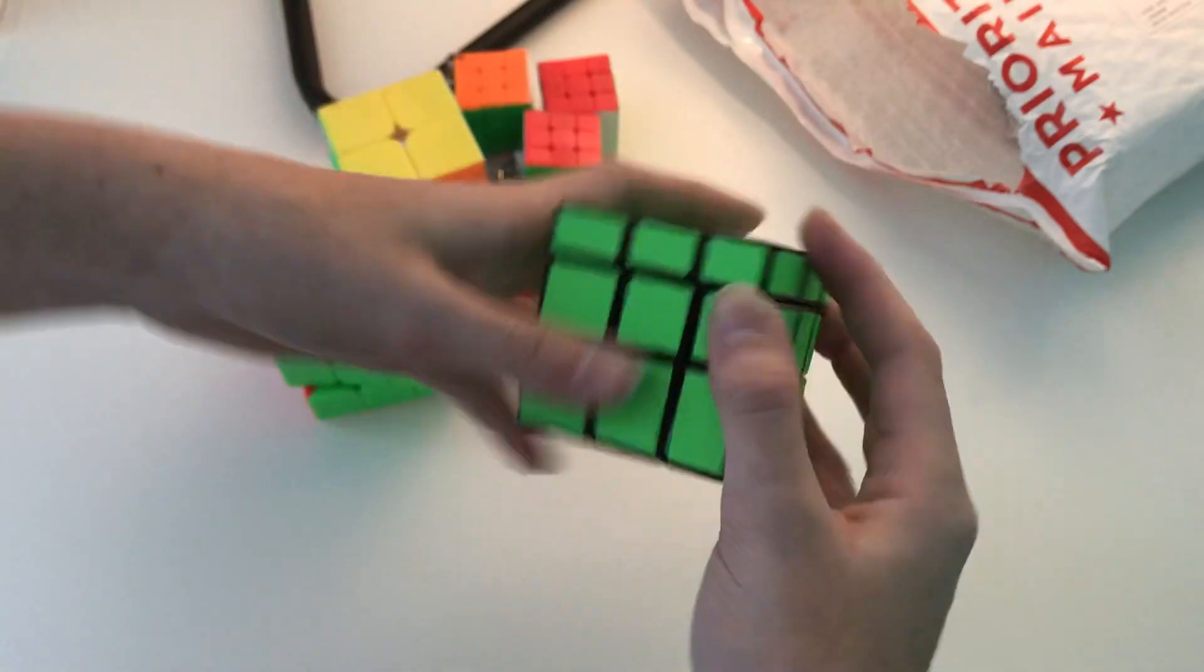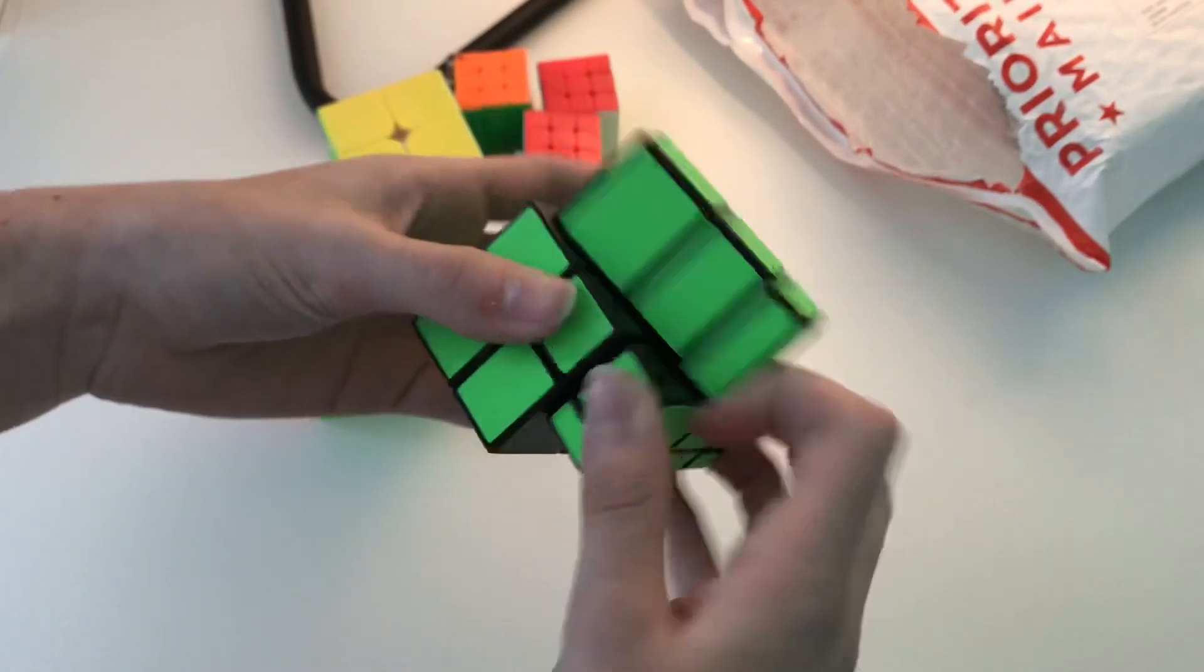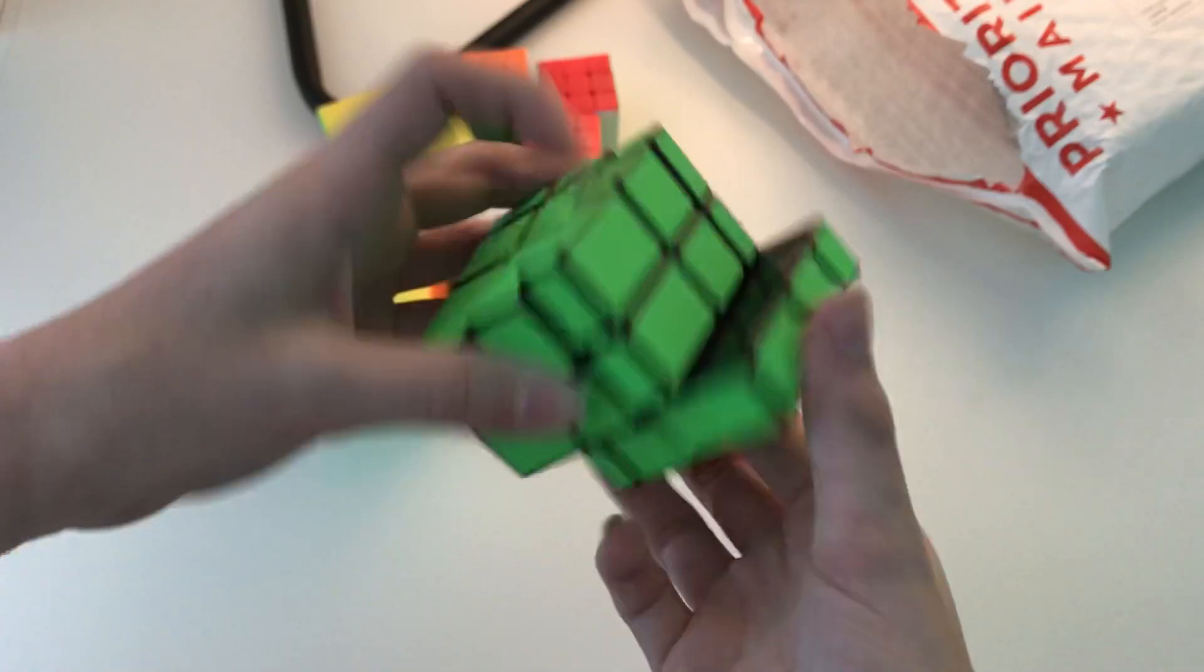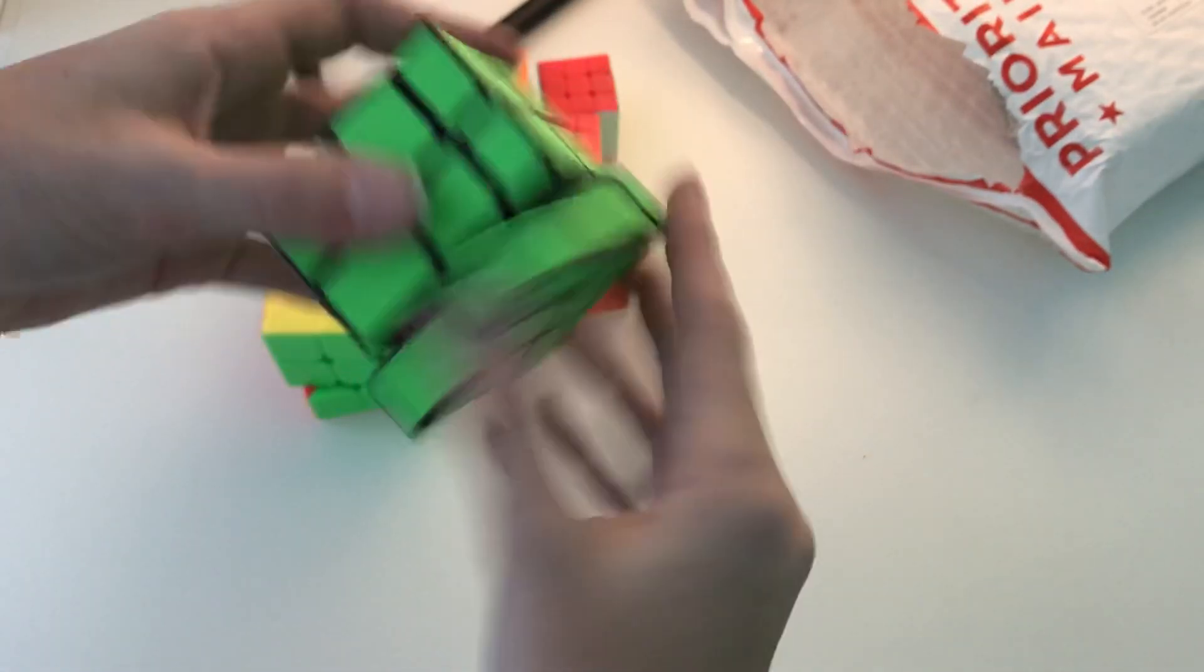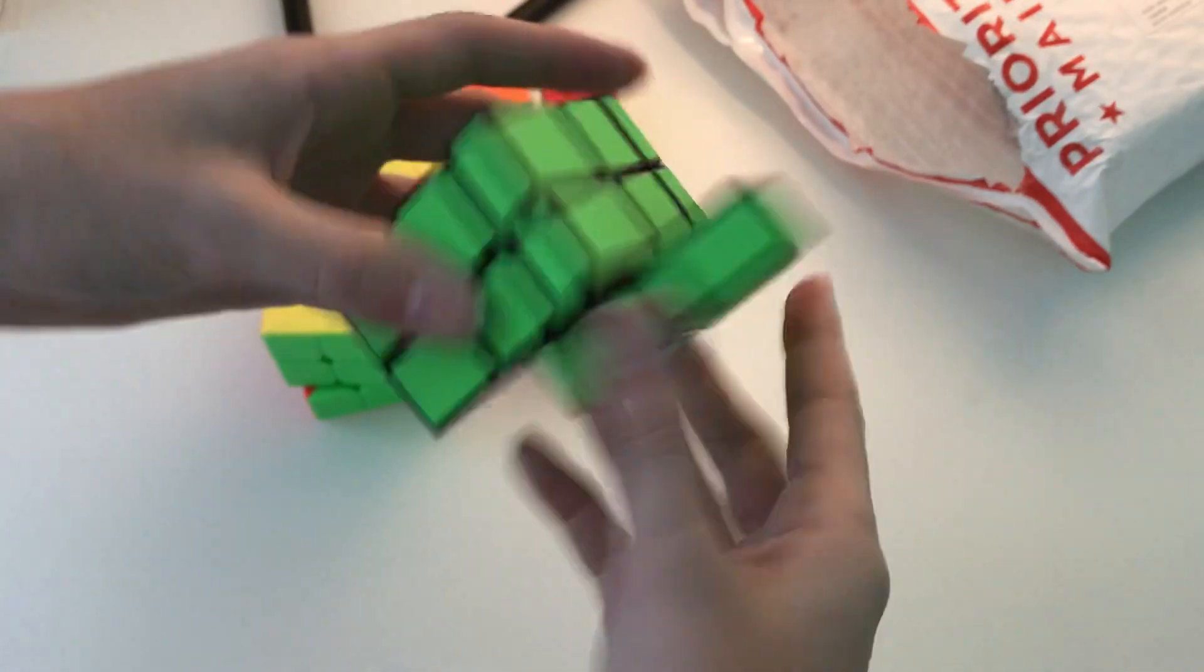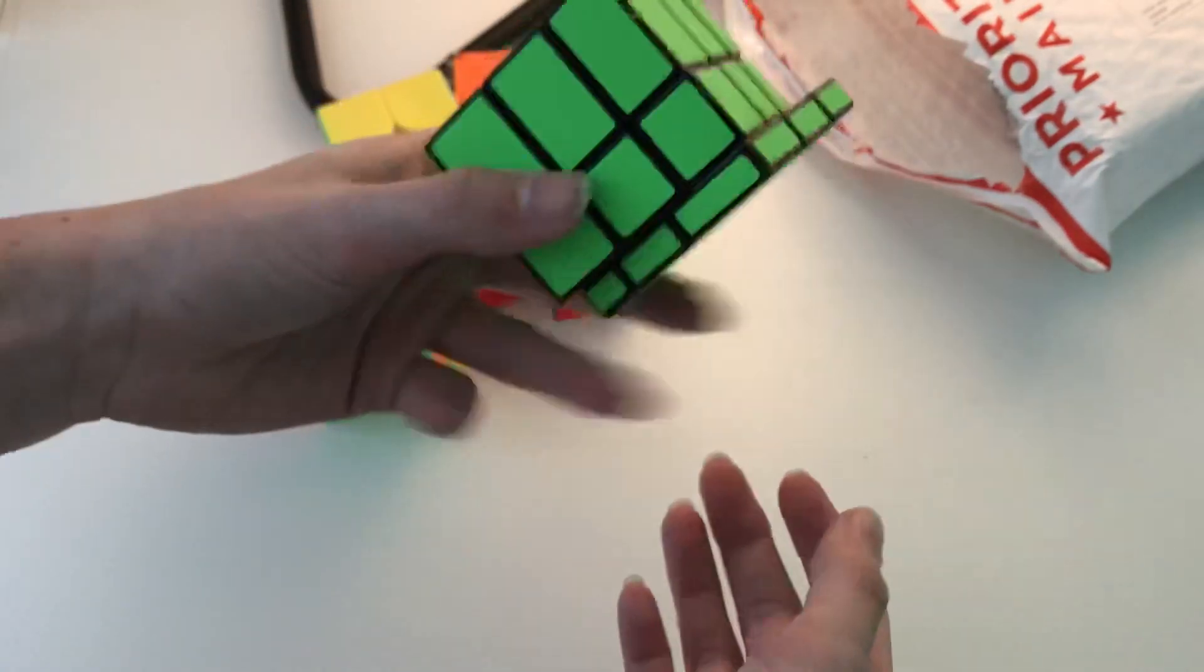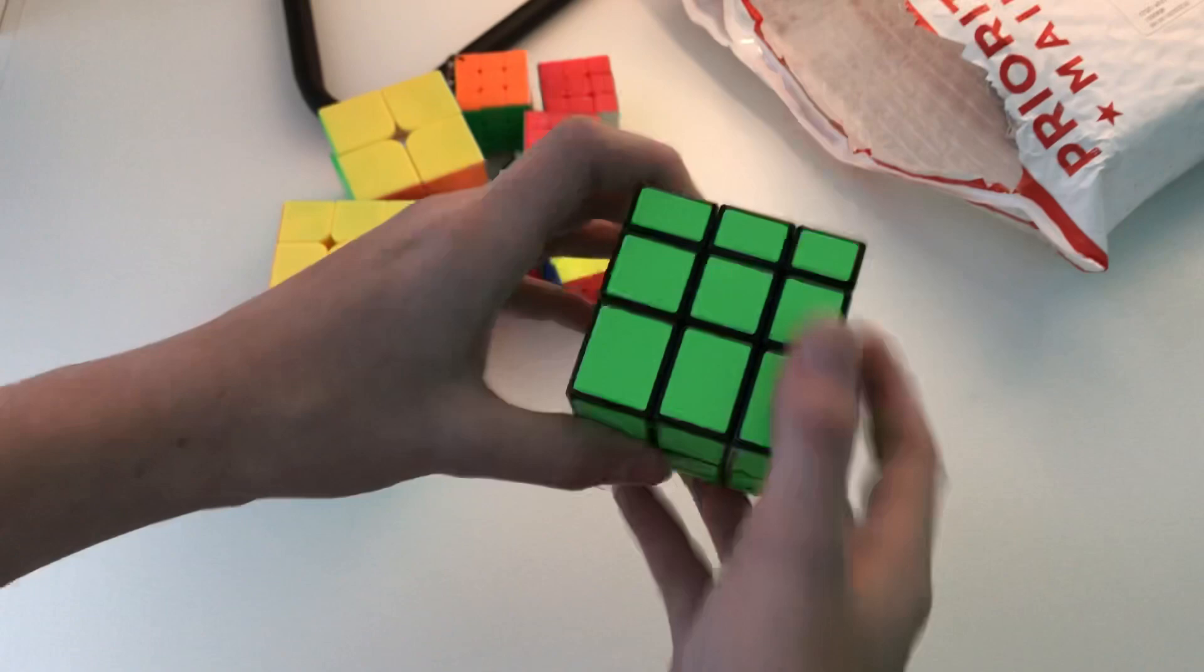I will be making a Siamese mirror cube, or a 3x3x5 mirror cube. I'm not exactly sure which one I'm going to make, but I do like these neon green stickers and this looks pretty cool. So I should have another one of those in here somewhere, but this is the Z-cube mirror cube.